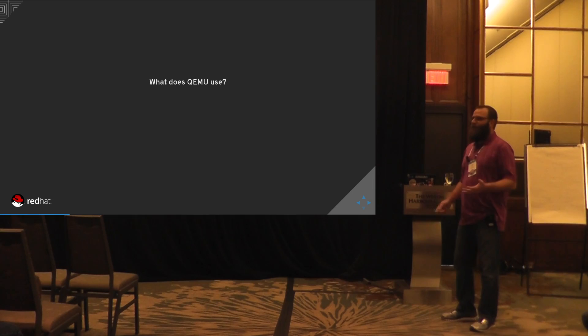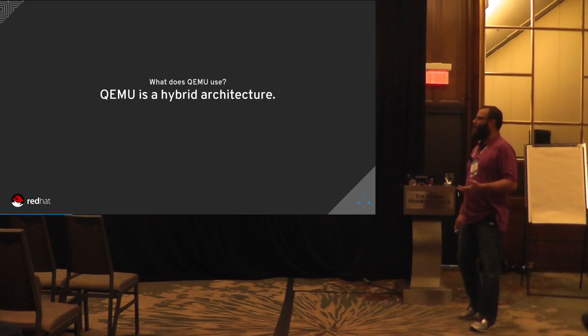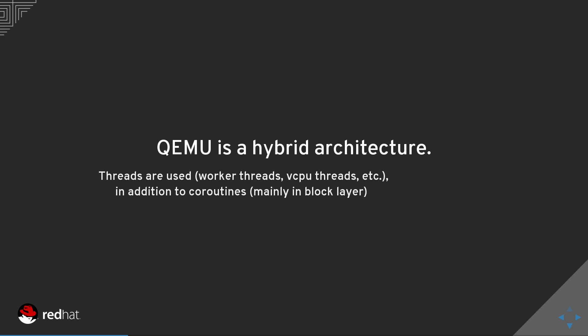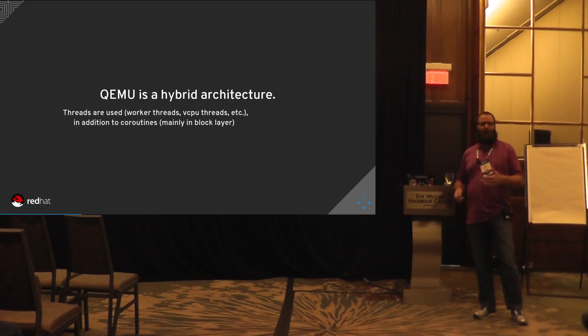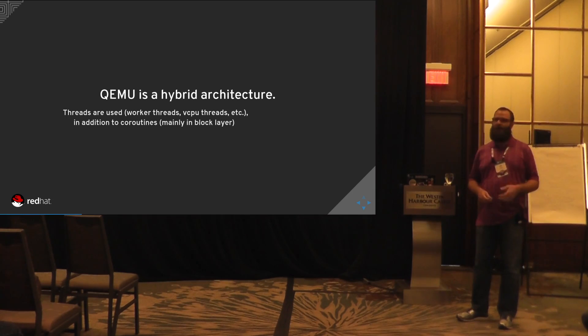QEMU is a hybrid architecture — we use both threads and coroutines. We have worker threads and threads for other tasks, but we use coroutines a lot in the block layer. We don't want to spawn lots of threads for every task we do. So we use coroutines within IO threads to perform our multitasking without blocking.